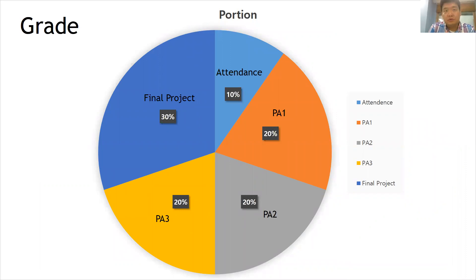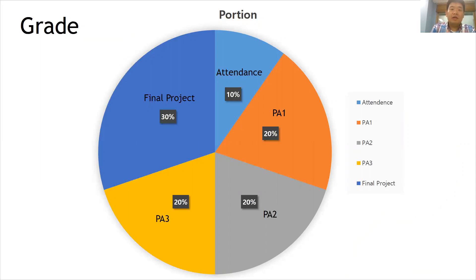Lastly, I would like to let you know the course evaluation, which I think some students are very curious about. In this course, we don't have any exams, but we have three programming assignments and one final project where you can select your own topic to implement state-of-the-art computer vision algorithms. So if you are interested in AI, machine learning, and computer vision, please take this course. Thank you.